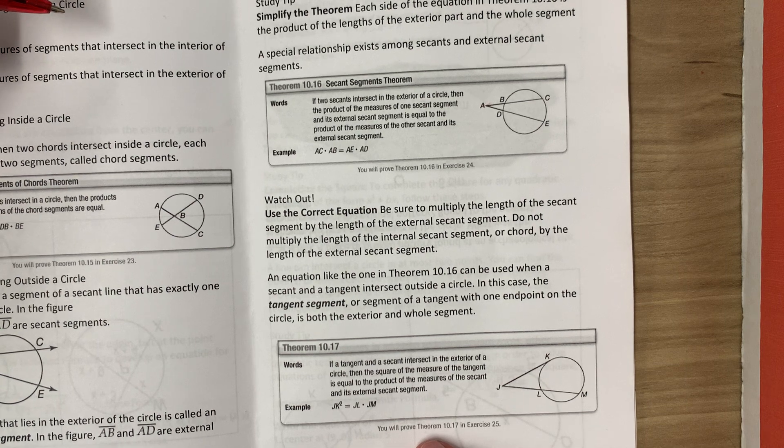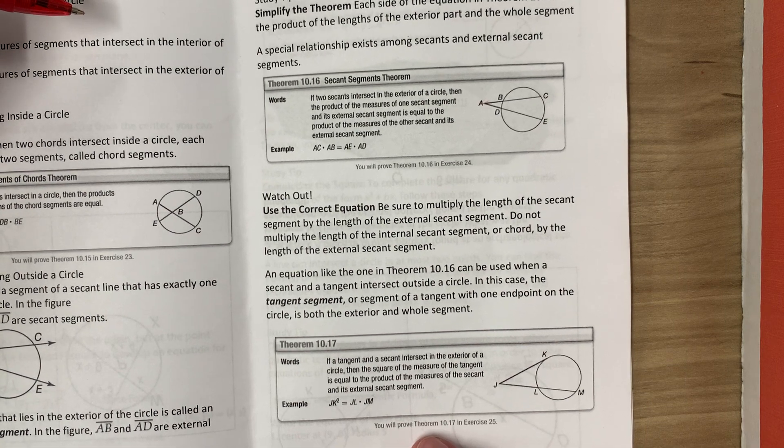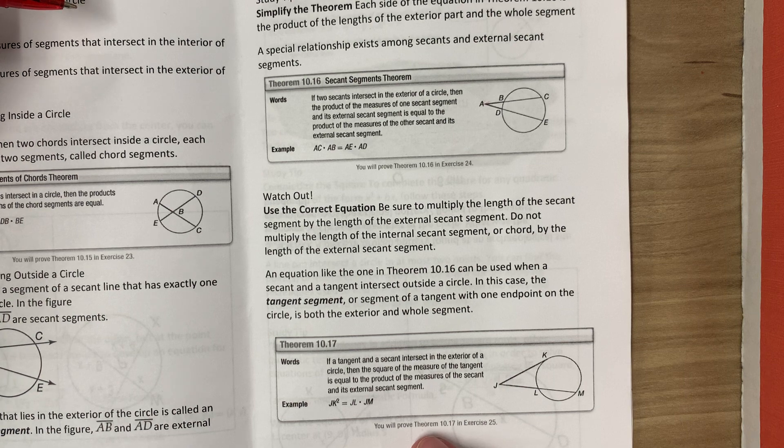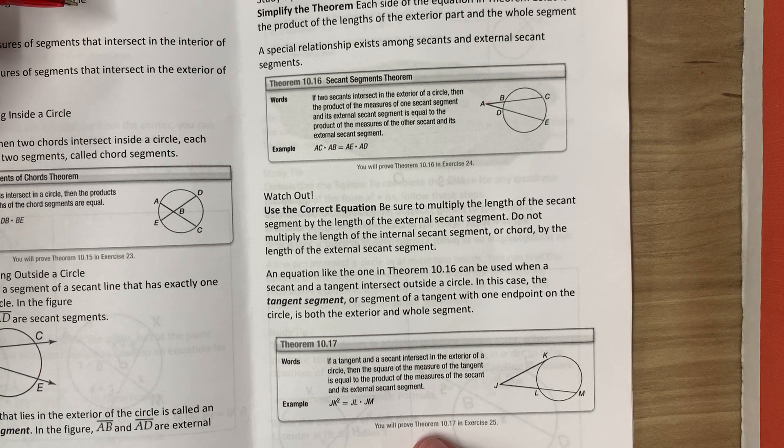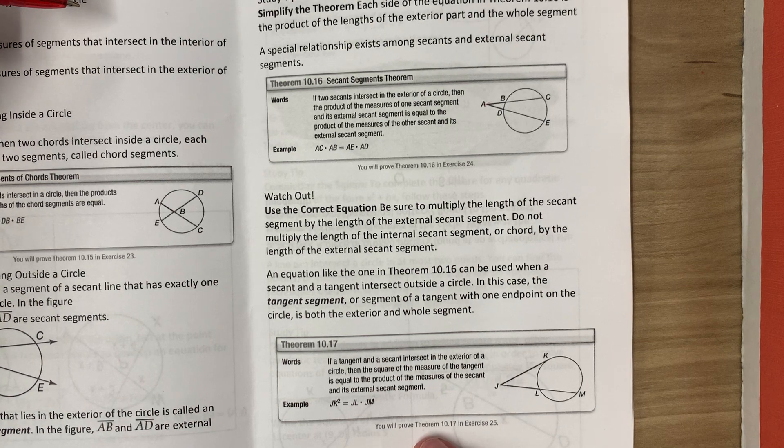An equation like the one in Theorem 10.16 can be used when a secant and a tangent intersect outside a circle. In this case, the tangent segment is both the external and the whole segment.